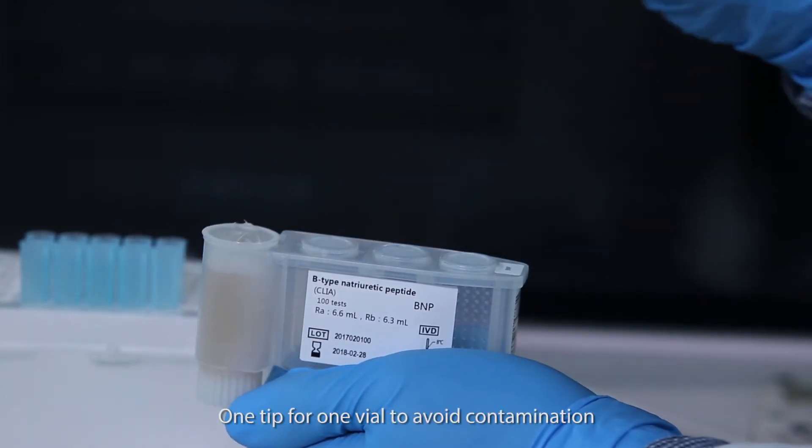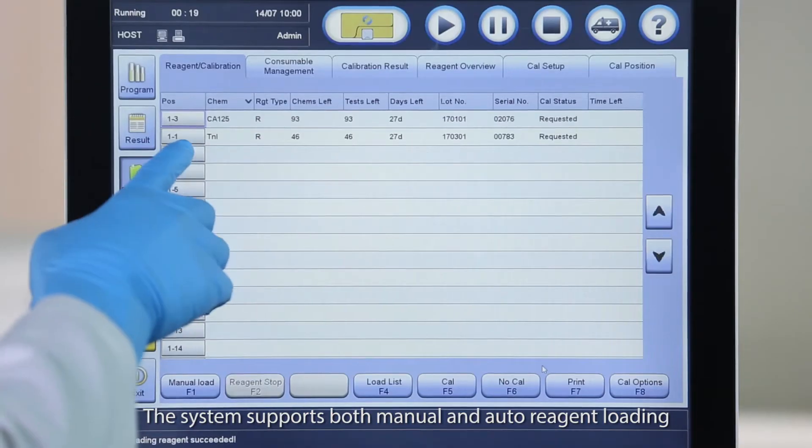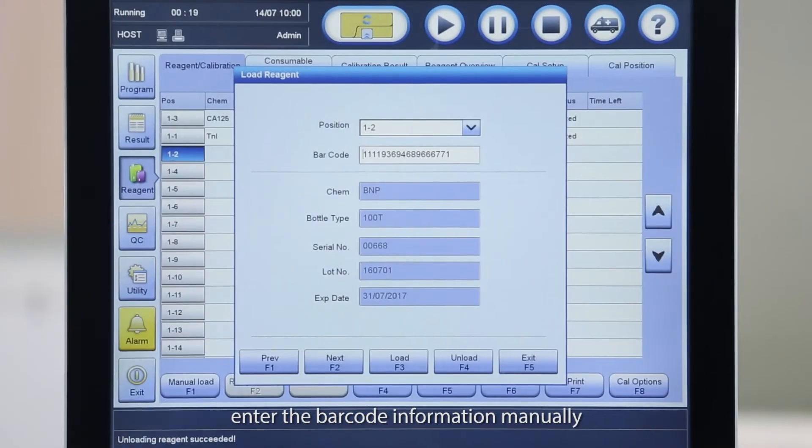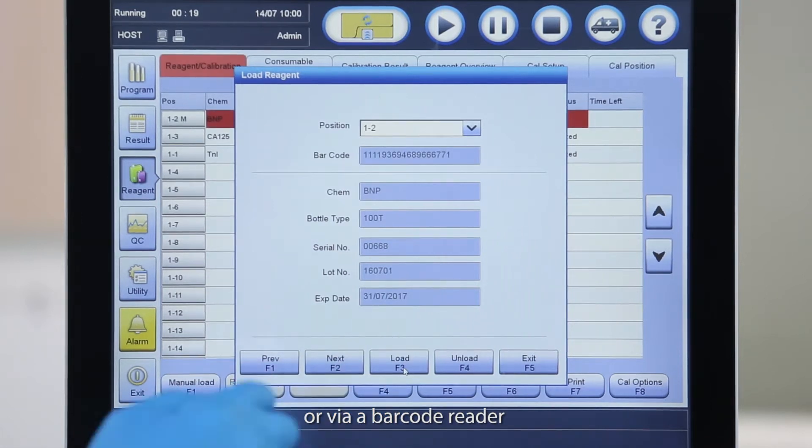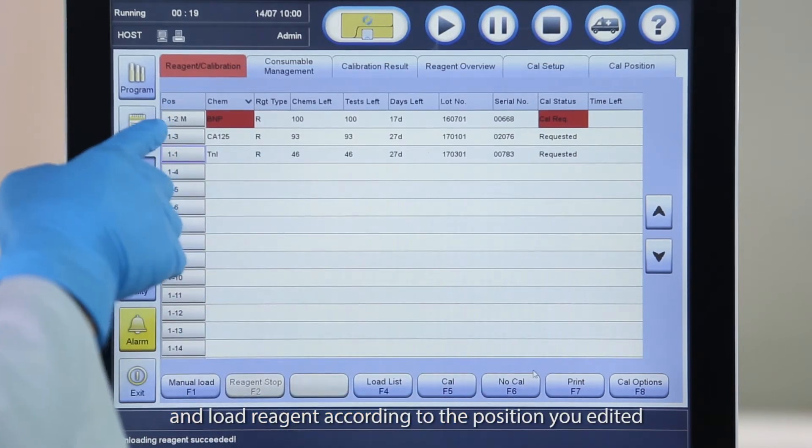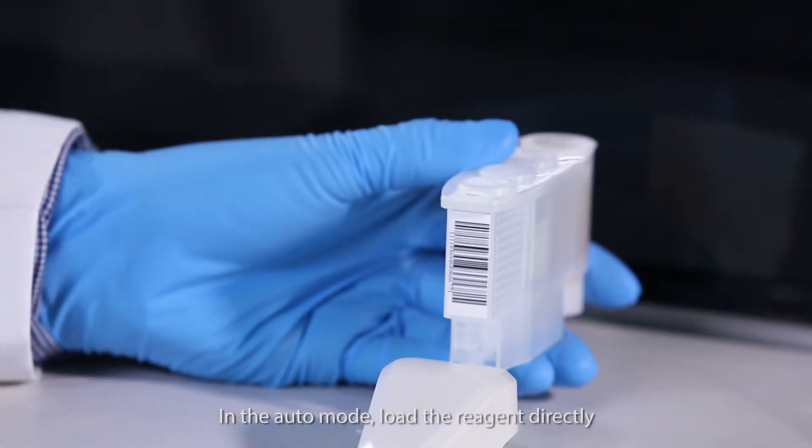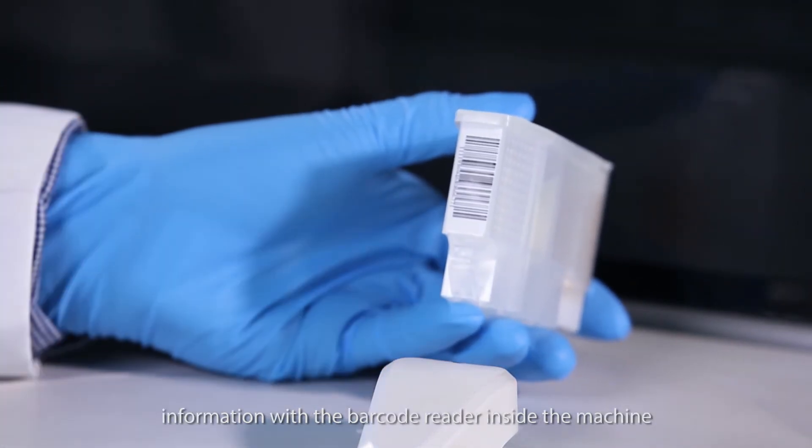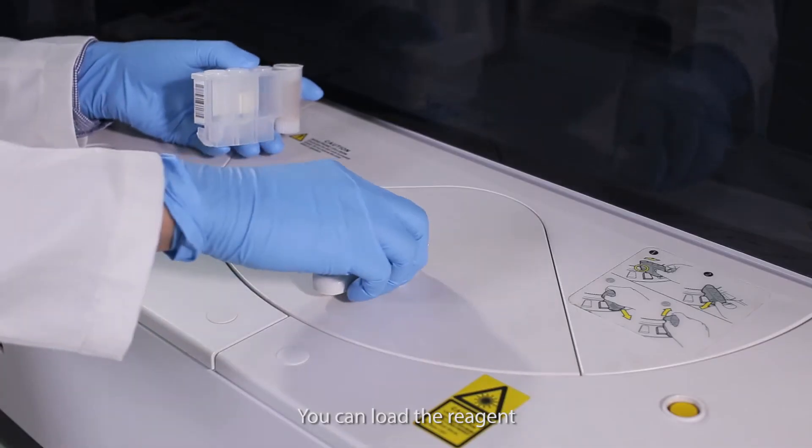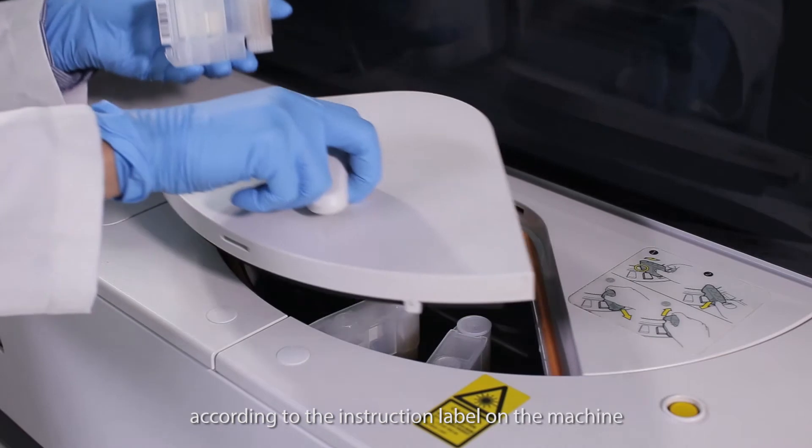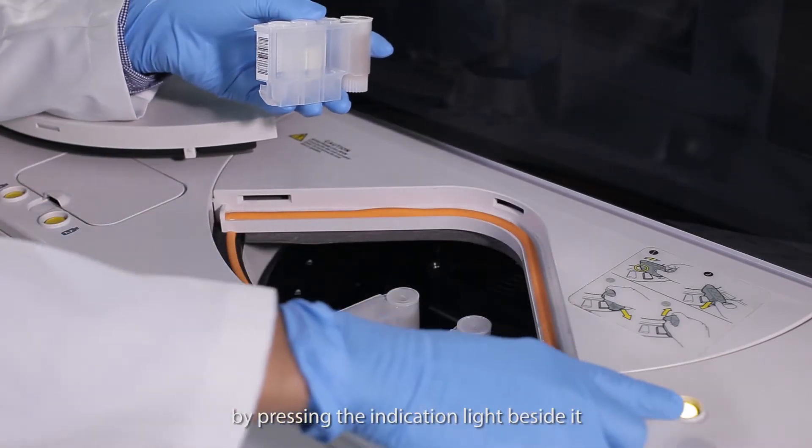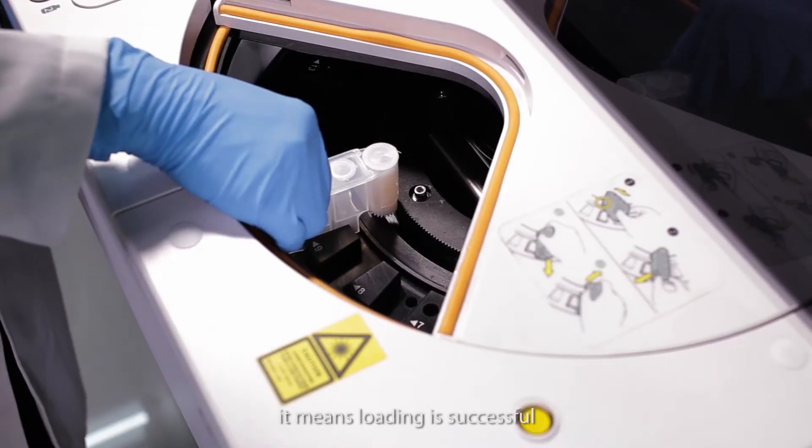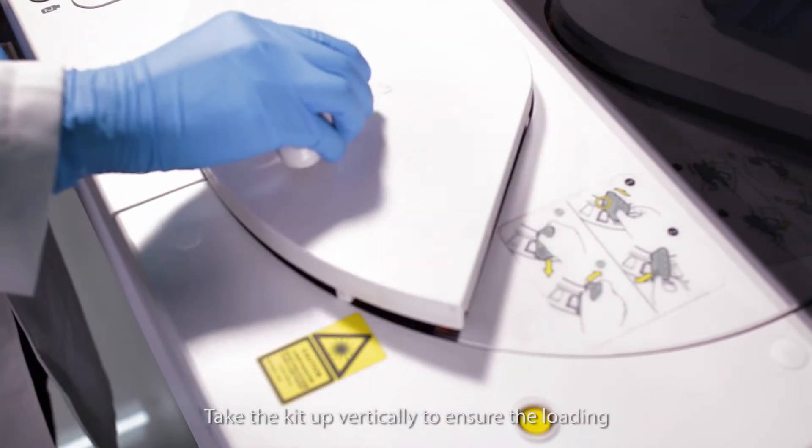One tip for one vial to avoid contamination. The system supports both manual and auto reagent loading. In the manual mode, enter the barcode information manually or via barcode reader and load reagent according to the position you edited. In the auto mode, load the reagent directly and the system will scan the reagent information with the barcode reader inside the machine. You can load the reagent according to the instruction label on the machine. Move the reagent carousel by pressing the indication light beside it. Hearing a click, it means loading is successful. Take the kit up vertically to ensure the loading.